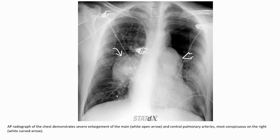This AP radiograph of a patient with a ventricular septal defect shows marked enlargement of the pulmonary trunk, and left and right pulmonary arteries, findings consistent with pulmonary artery hypertension. The AP chest radiograph demonstrates severe enlargement of the main and central pulmonary arteries with peripheral vessel pruning on the right.